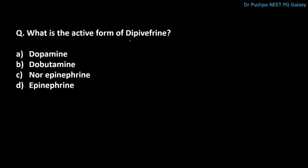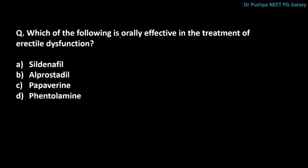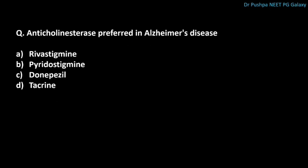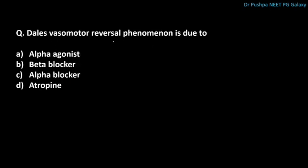What is the active form of dipivefrine? The correct answer is epinephrine. Which drug is orally effective in the treatment of erectile dysfunction? The correct answer is sildenafil. Which anticholinesterase is preferred in the treatment of Alzheimer's disease? The correct answer is donepezil, because it is cerebroselective and reversible. Dale's vasomotor reversal phenomenon is due to alpha blockers.